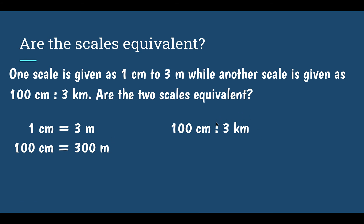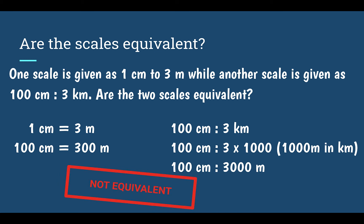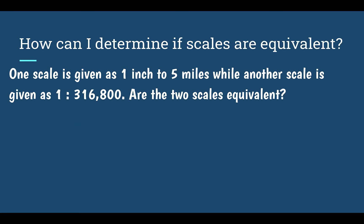Let's change kilometers into meters. I had three kilometers, and there are 1,000 meters in one kilometer, so I multiply three by 1,000. That gives 100 centimeters equal to 3,000 meters. Comparing the two scales: both have 100 centimeters on the drawing side, but one equals 300 meters while the other equals 3,000 meters. Those are not the same — they are not equivalent.